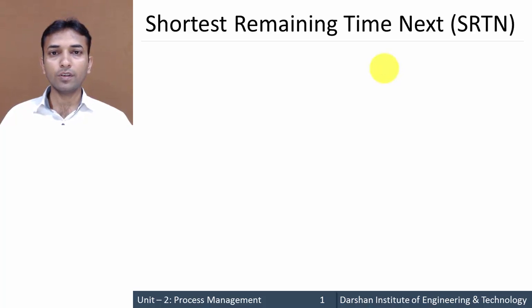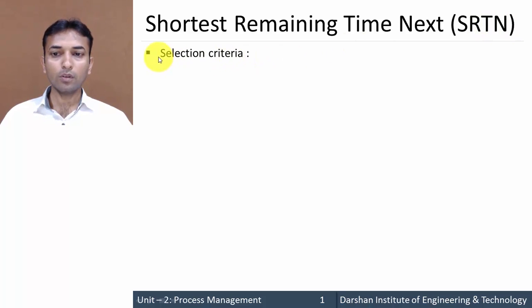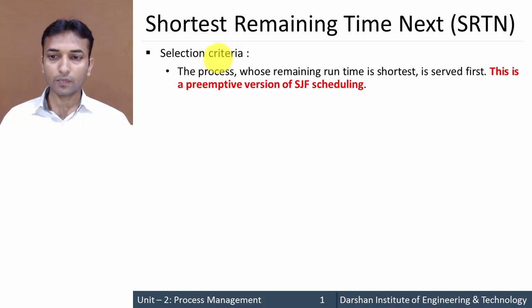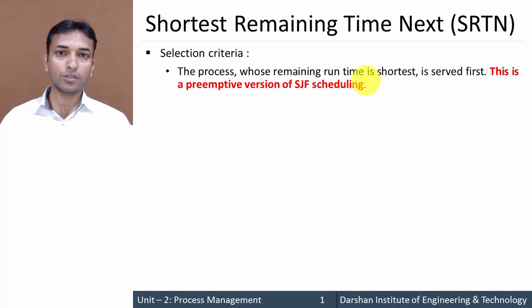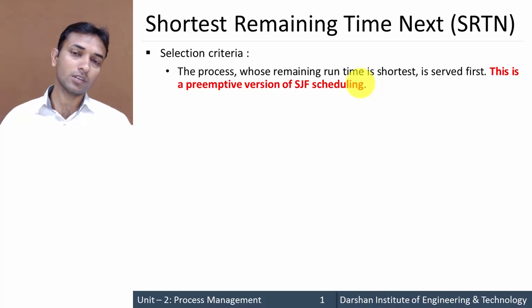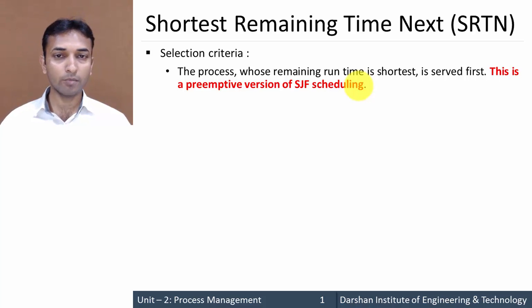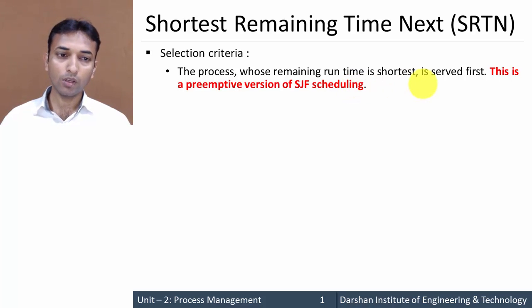In this video we will learn about Shortest Remaining Time Next scheduling algorithm, also known as SRTN. The selection criteria in this algorithm is that the process whose remaining runtime is shortest is selected first. Every time a new process arrives, its completion time is compared with the current running process's remaining time. If the new process requires less time to complete its execution, the current process will be suspended and the new process will be started.